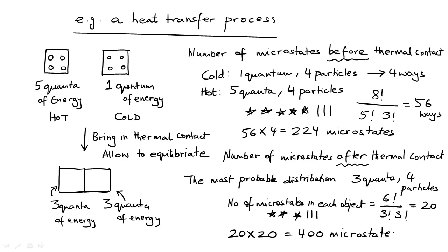We can see that the number of microstates in the system before the heat transfer is 224, and that has increased to 400 microstates after the heat has transferred spontaneously. So there is an increase of microstates during this spontaneous process of heat transferring from the hot object to the cold object.